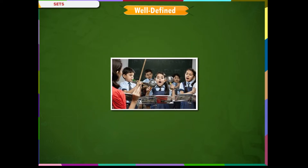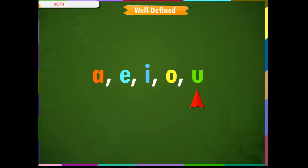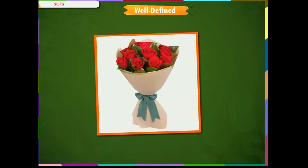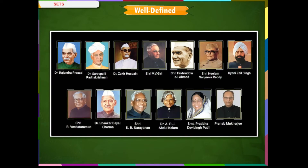Some examples of well-defined sets. 1. The collection of vowels in English alphabets. This set contains 5 elements, namely A, E, I, O, U. 2. A collection of red flowers is a set because every red flower will be included in this set; that is, the objects of the set are well-defined. 3. The collection of past presidents of India is a set.